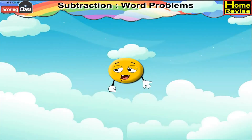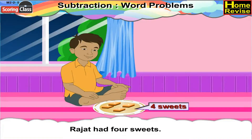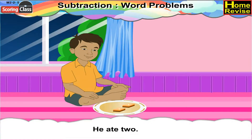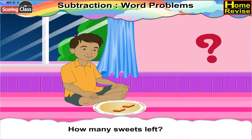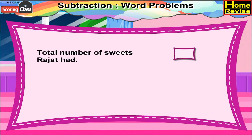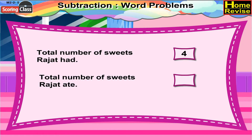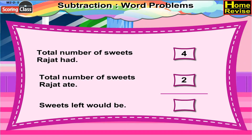Subtraction word problems. Rajat had four sweets. He ate two. How many sweets are left? Total number of sweets Rajat had is equal to four. Total number of sweets Rajat ate is equal to two. So, the sweets left would be four minus two, which is equal to two.